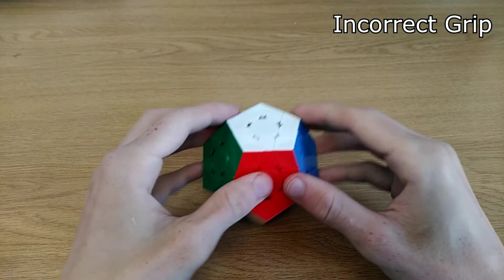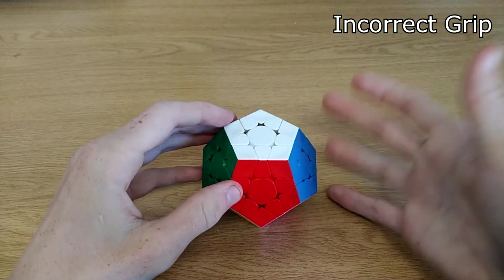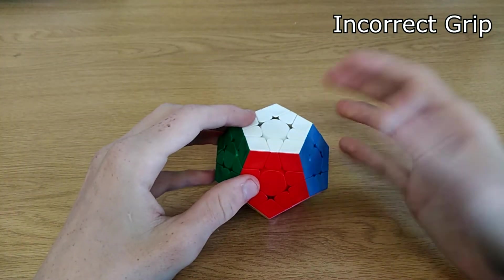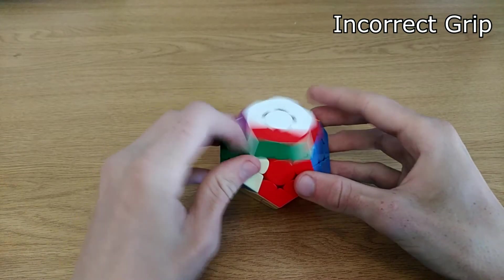If you solve the cube on the table, then it doesn't really matter how you grip it since the table takes the place of your pinky, because the table holds the cube, so it doesn't really matter how you hold it.